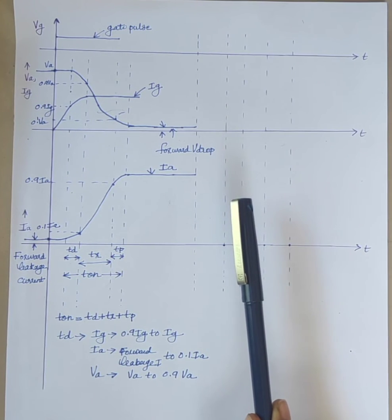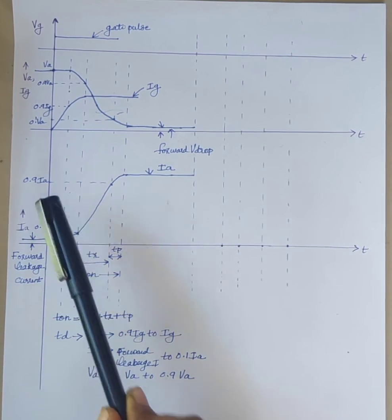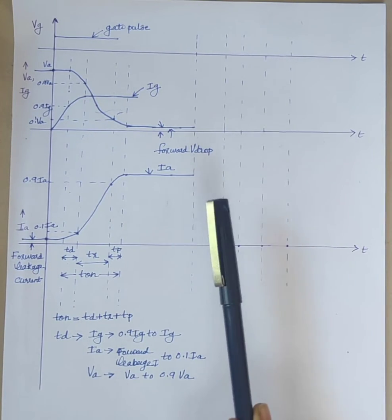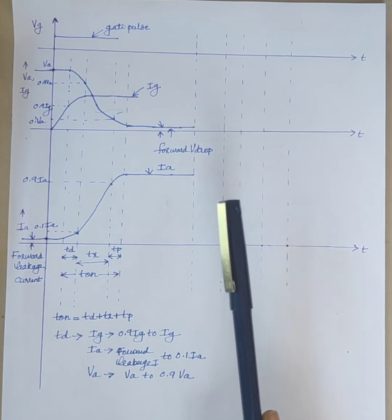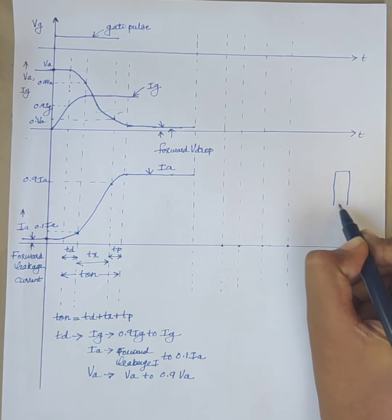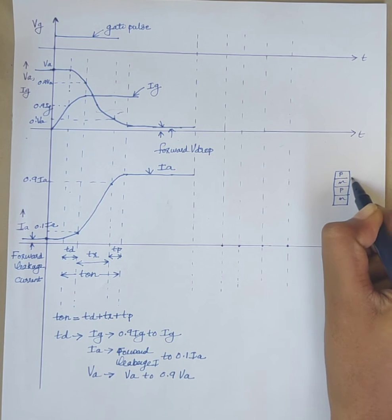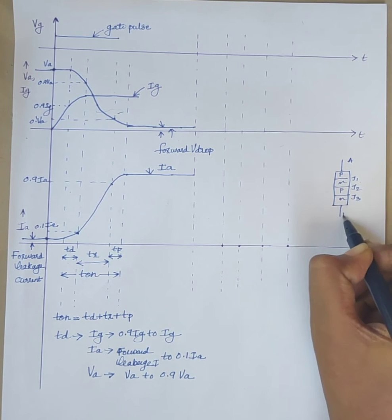First one is anode current IA must fall below the holding current IH. Also due to the presence of charge carriers in the four layers of P, N, P, N, this one is J1, J2, J3, this one is anode and cathode.